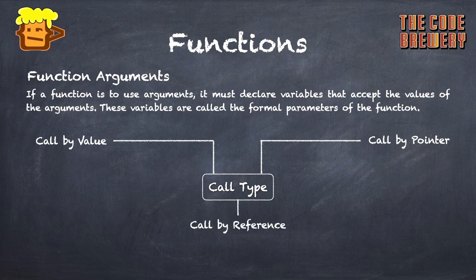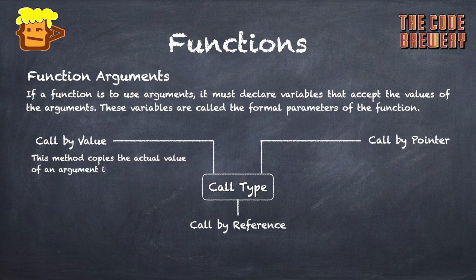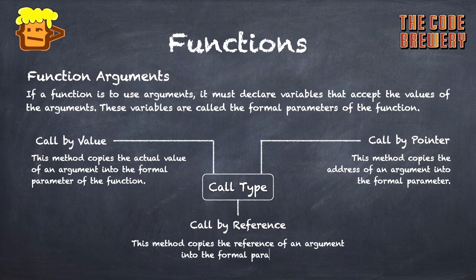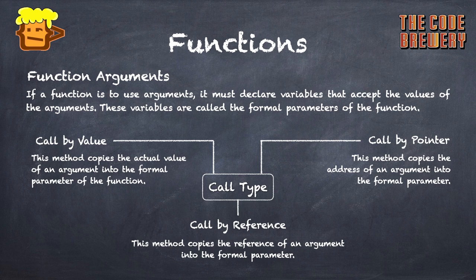What kind of call types are there? Call by value, call by pointers, and call by reference. This method, call by value, copies the actual value of an argument into the formal parameter of the function. Call by pointer copies the address of an argument into the formal parameters. Call by reference copies the reference of an argument into the formal parameters.